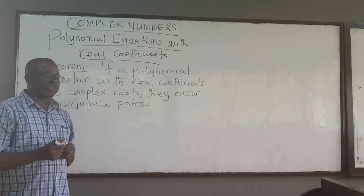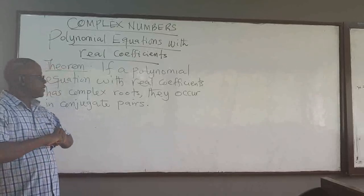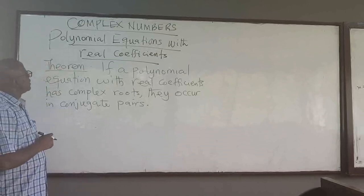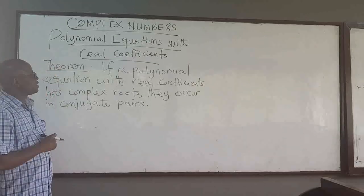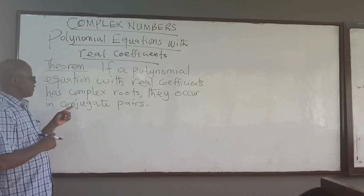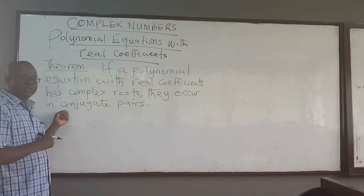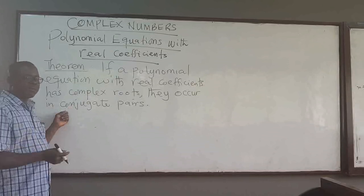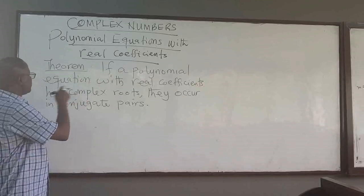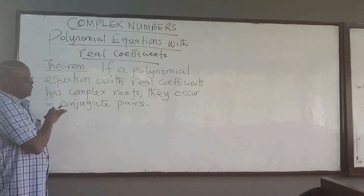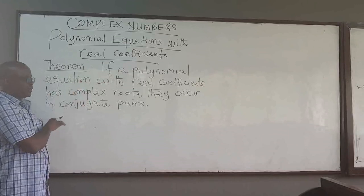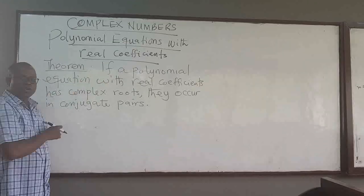Welcome to this lecture. Here we want to continue with our study of complex numbers. We want to look at polynomial equations with real coefficients. We start with the theorem: if a polynomial equation with real coefficients has complex roots, they occur in conjugate pairs.